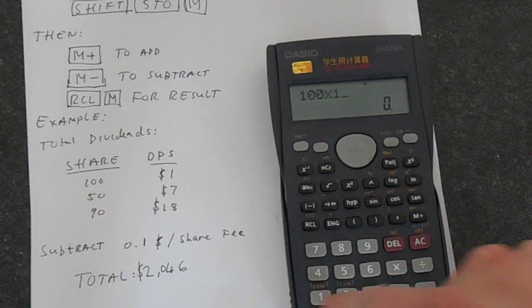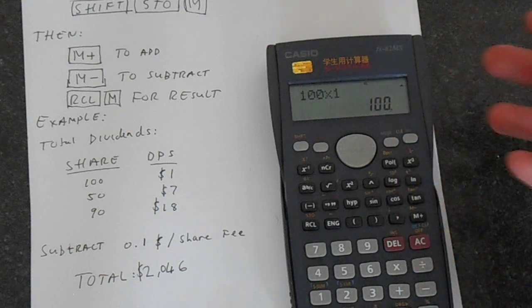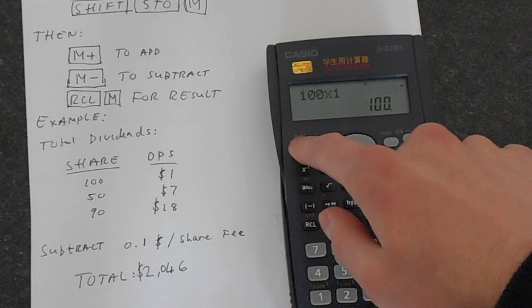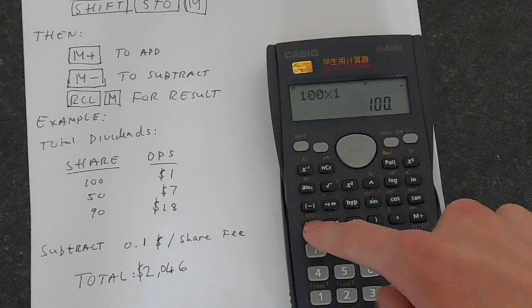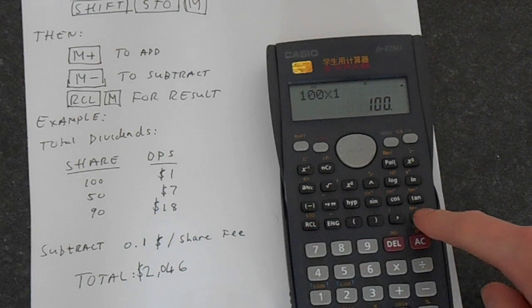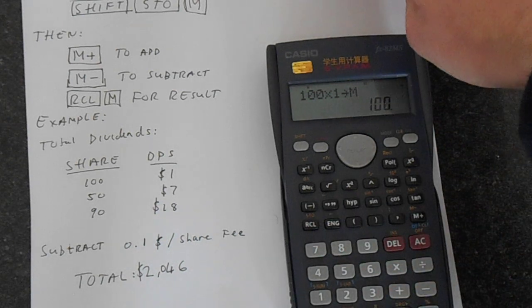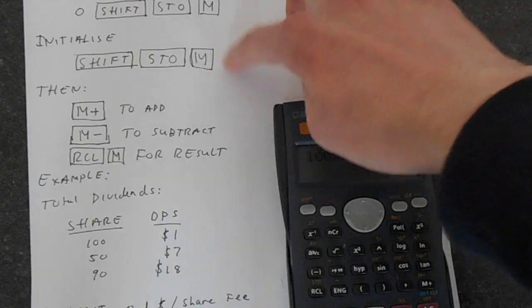We do 100 times 1. Shift, then STO, and then M. So that saves that in M. You see this step up here, initialize? That's what we've done. We've put the first result in there.